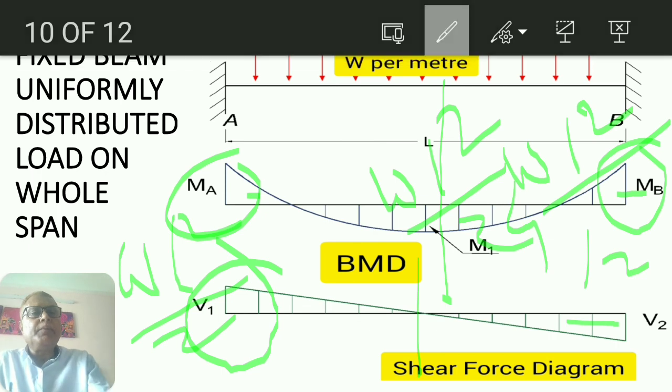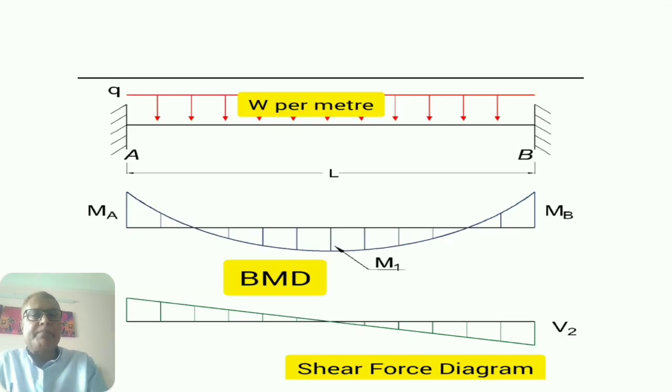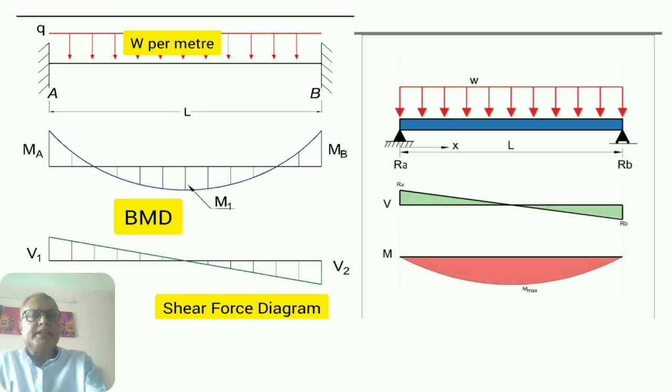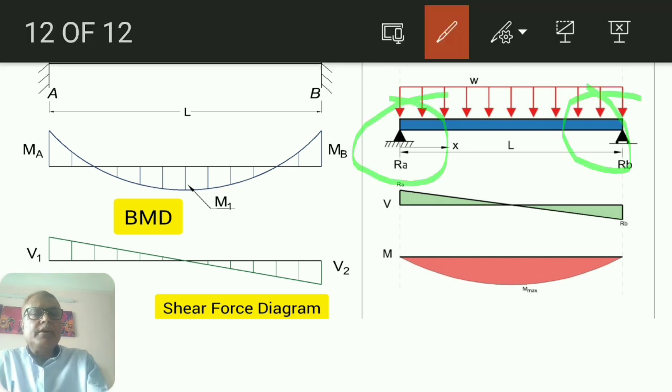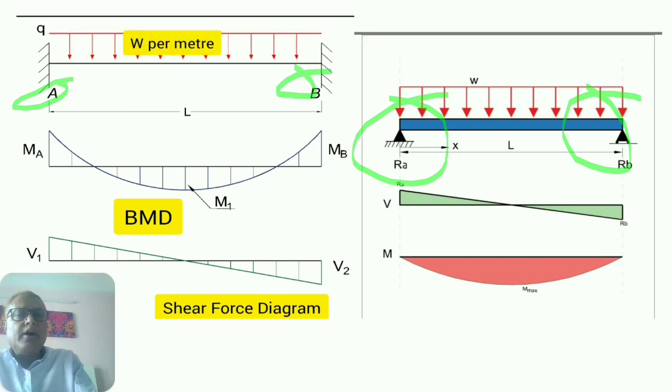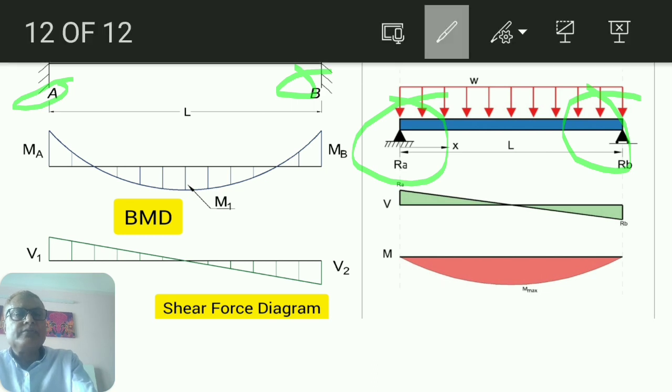So when we compare the two beams, these are the comparative study of both the beams. Here only one support reaction in vertical direction, but in the fixed beam there will be three types of reactions developing at both ends.